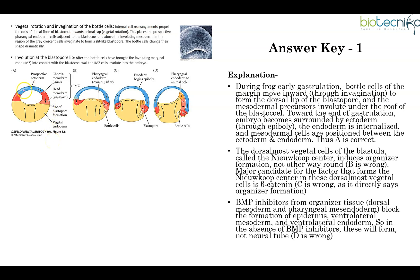The animal cap is the top portion of the embryo, and the vegetal side is the bottom portion. The side where the blastocoel cavity is present is called the animal hemisphere, and the other half is the vegetal hemisphere, which mainly contains yolk. From here, gastrulation begins and the cells start moving towards the animal pole, slowly spreading toward the animal cap.